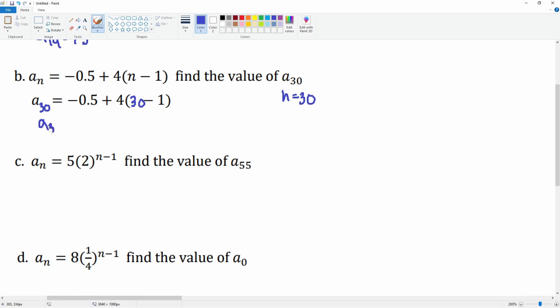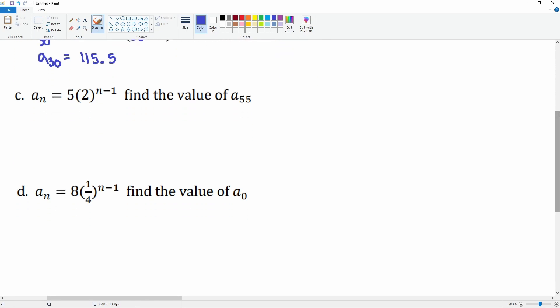C, same process. My n is equal to 55 here because it's looking for my a₅₅, or the value of my 55th term. I rewrite the equation, I substitute in the value of 55 for the n.